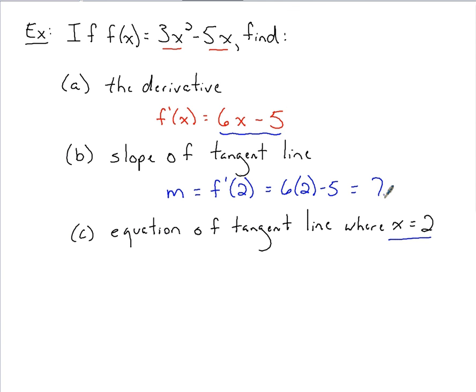So now if we're going to find the equation of the tangent line where x is 2, if we put our answer in point-slope form, we need a point, we need a slope. We've got half of a point here with an x-coordinate, and we've got our slope. So we still need to figure out the y-coordinate. To figure out the y-coordinate, we take this value of x is 2, we go back to the original function, and we plug in.